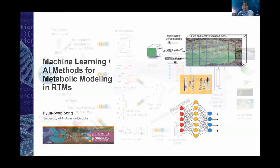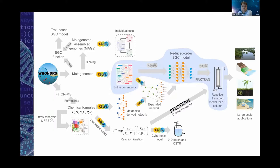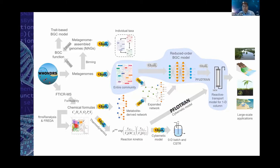This is an overview, and the highlighted shaded area represents what I'm going to cover in this talk. I'll discuss how to utilize the genome-scale skeletal model developed from metagenomes using KBase, then run this FBA model and generate data. That generated data will be used to train a machine learning model — in this case, a neural network model — which will be used as a reduced-order biogeochemical model for coupling with a reactive transport model for 1D column simulation as an example.